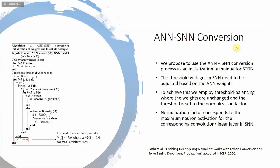Let me go over the ANN to SNN conversion, which is the main contribution of our project. We propose an ANN to SNN conversion algorithm wherein we use the ANN-SNN conversion as an initialization technique for spike timing dependent backpropagation. The goal is to match the input-output mapping function of the trained ANN to that of an SNN. After obtaining the trained ANN, we first copy the weights from the ANN to the SNN and initialize the threshold voltages for all layers to zero.